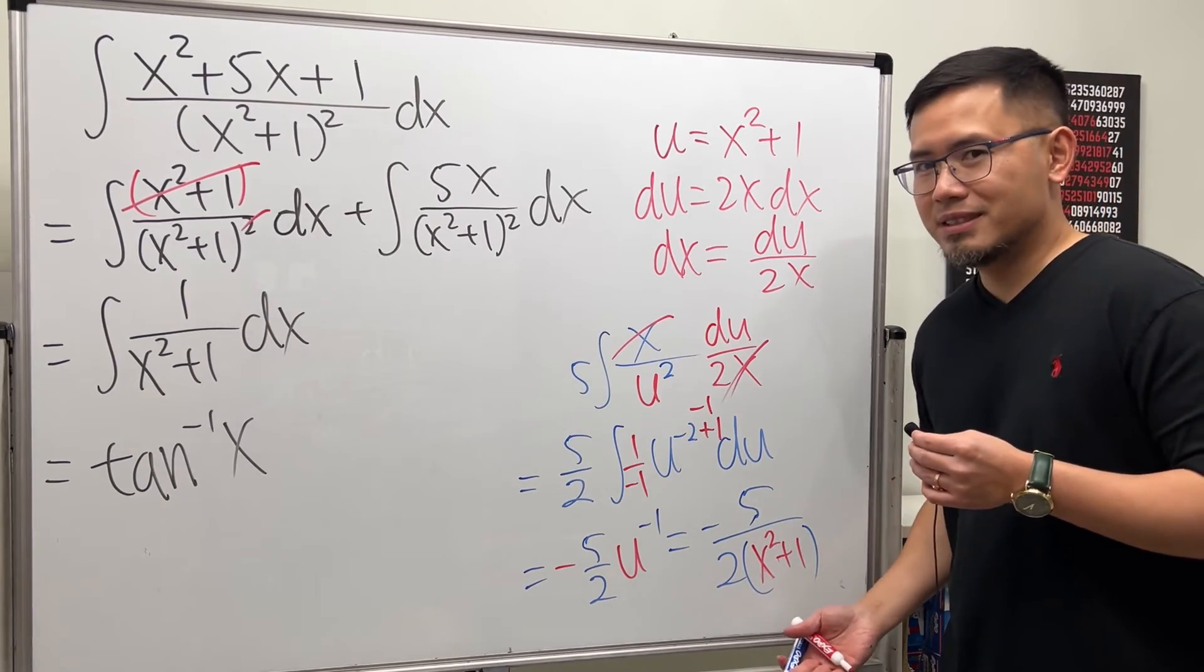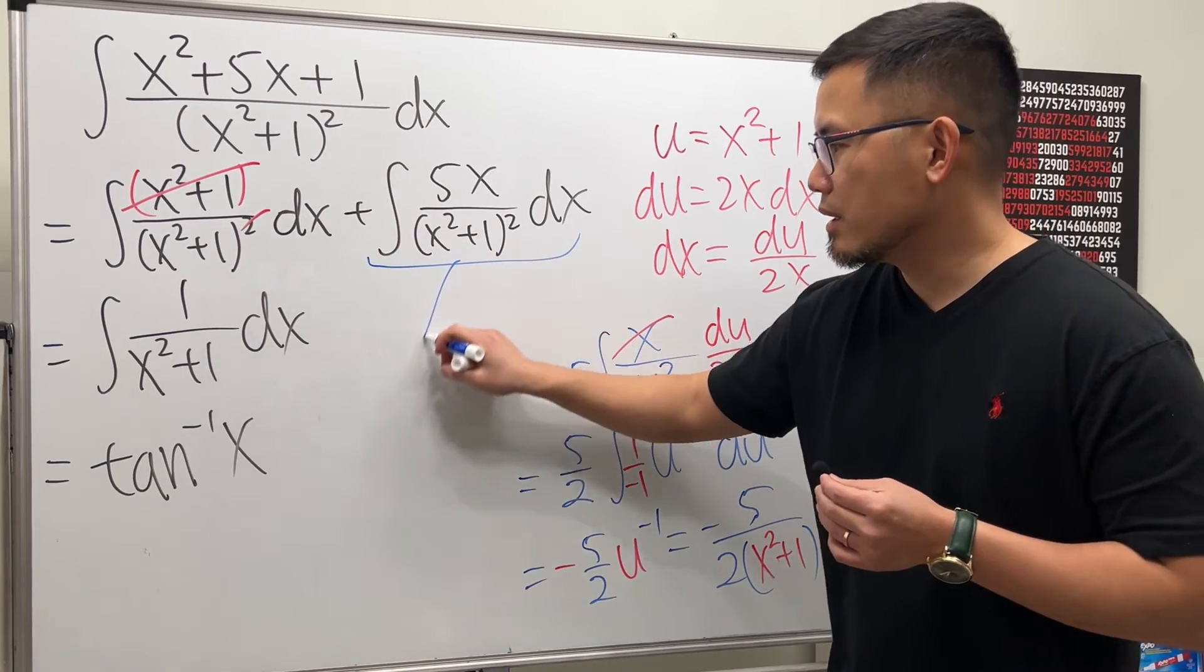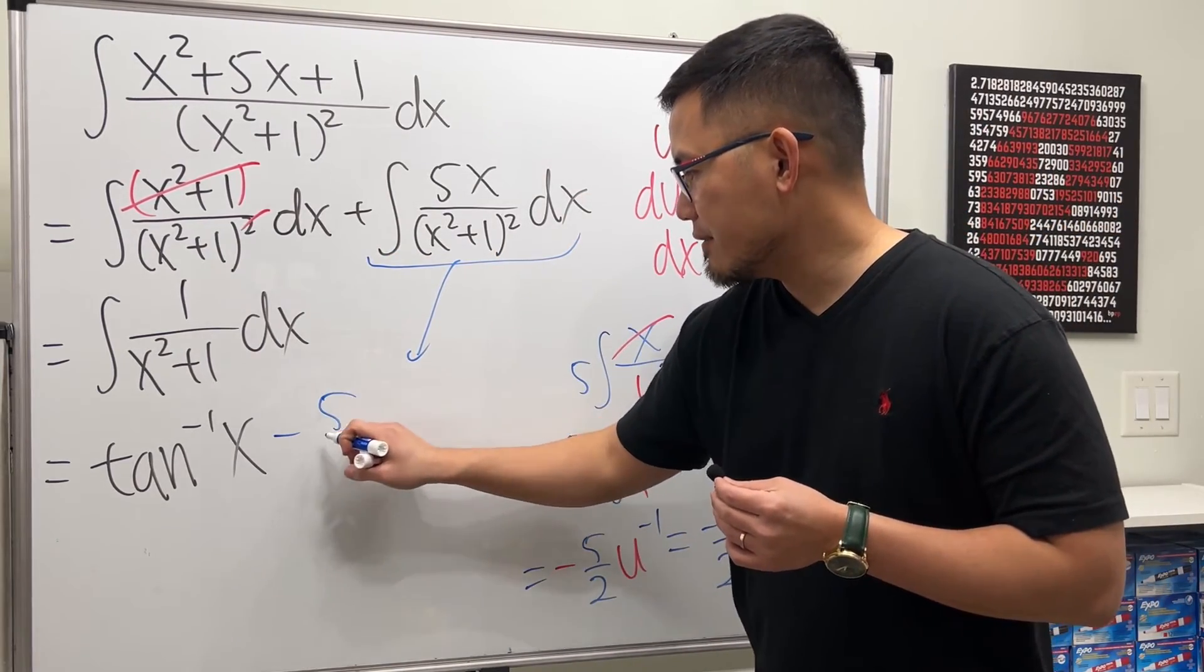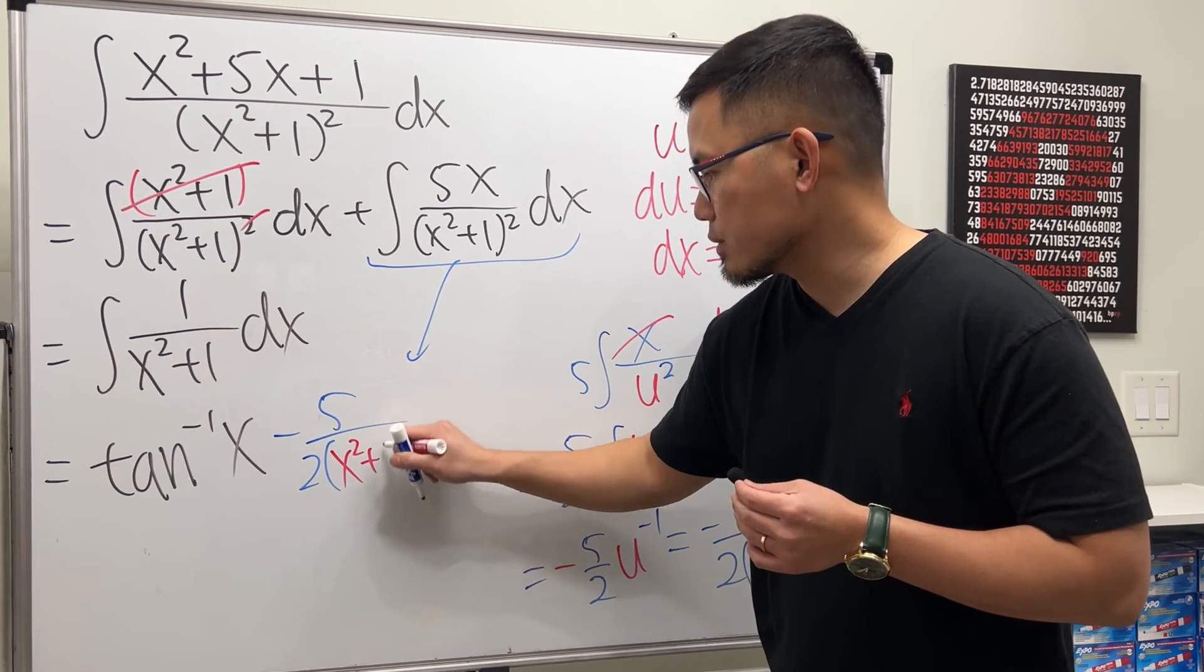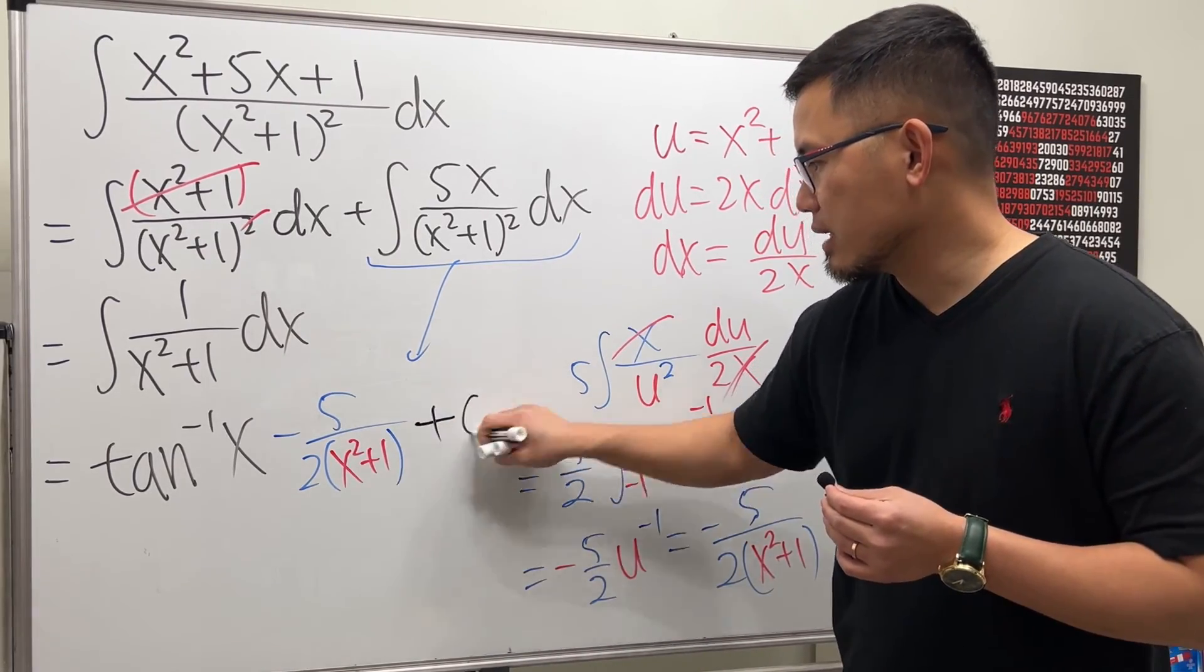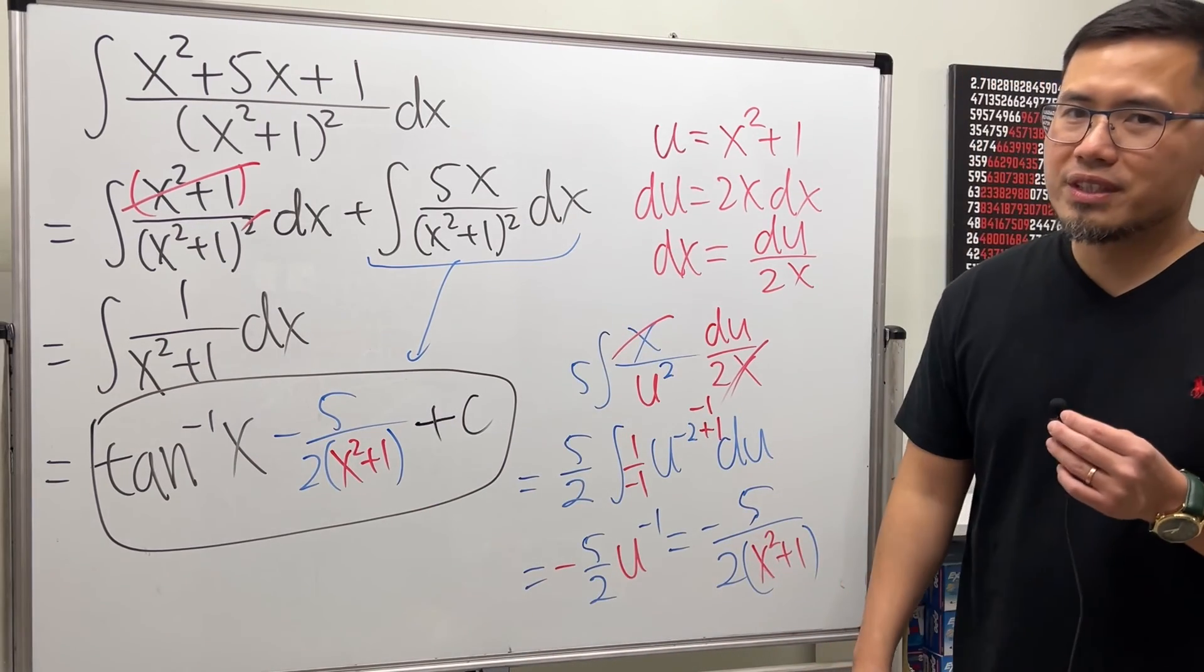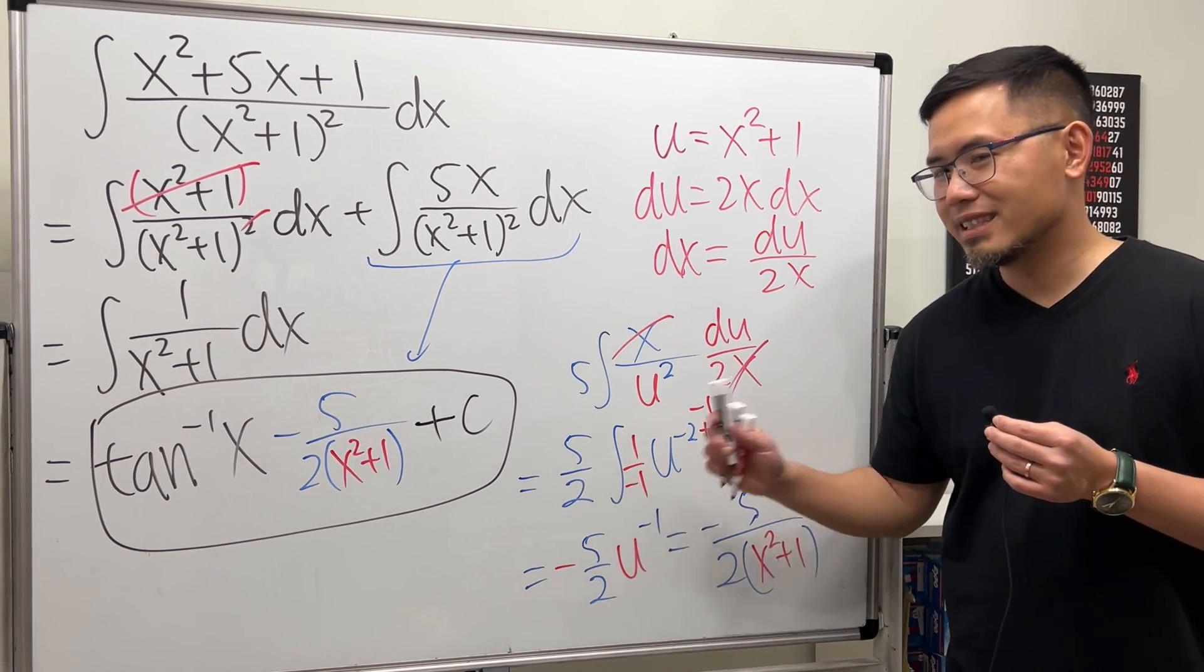I don't need a plus C because this is not the main integral. So for this right here we will get minus 5 over 2 parentheses x squared plus 1. And then at the very end here we add a plus C. So hopefully this right here helps. Best of luck to you on your Cal 2 test. That's it.